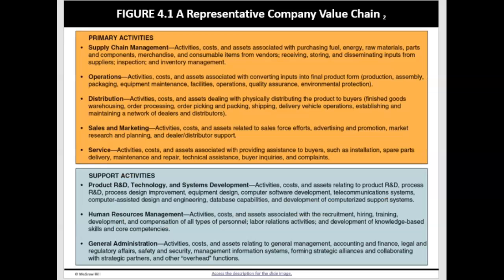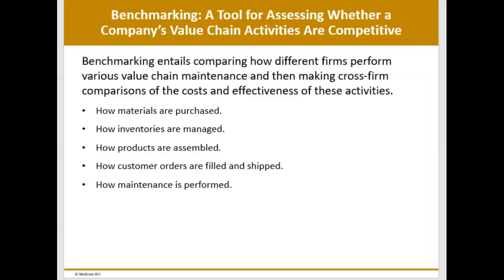Every firm's business consists of a collection of activities undertaken in the course of producing or delivering your product or service. All the various activities that your organization performs internally combine to form a value chain within your company — so called because the underlying intent of the firm's activities is ultimately to create value for the buyers, to delight the customer. The primary and support activities are listed on the slide; you can pause and review those at your leisure.